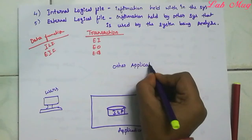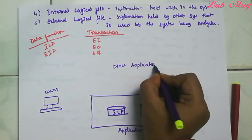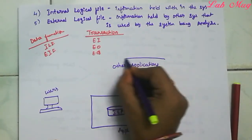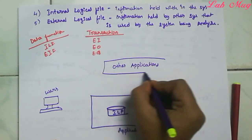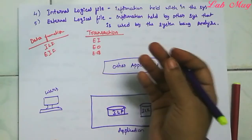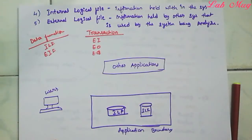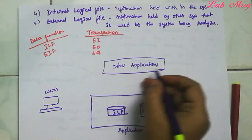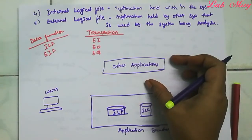The third part is Other Applications. Other applications may include hard disks and other apps outside the system boundary.